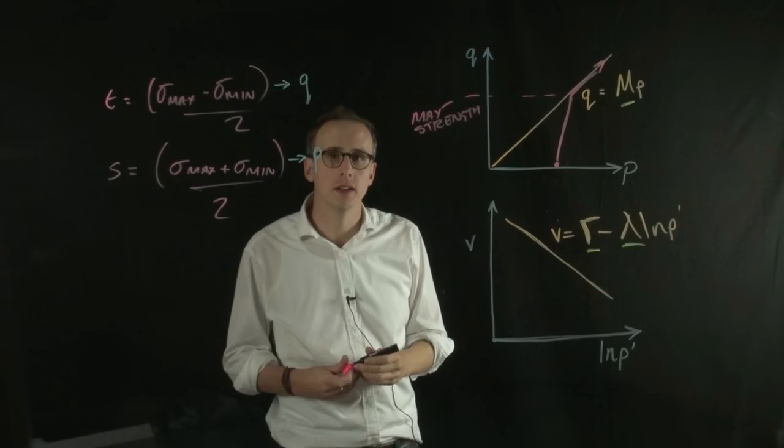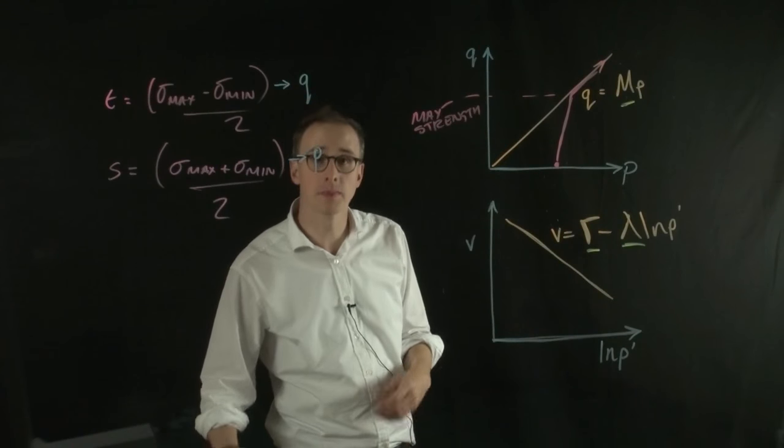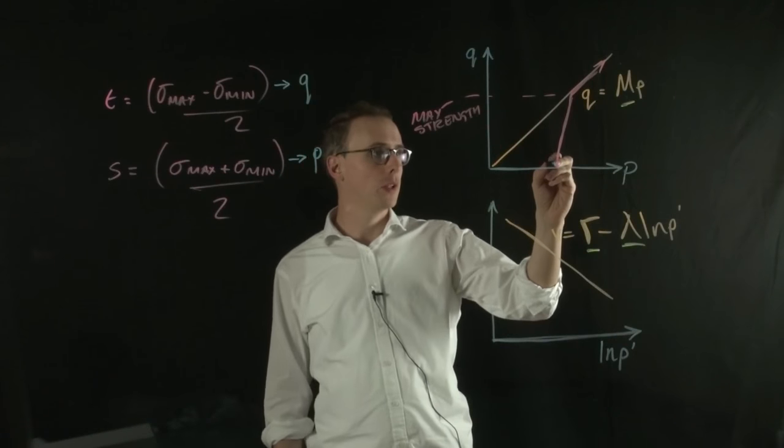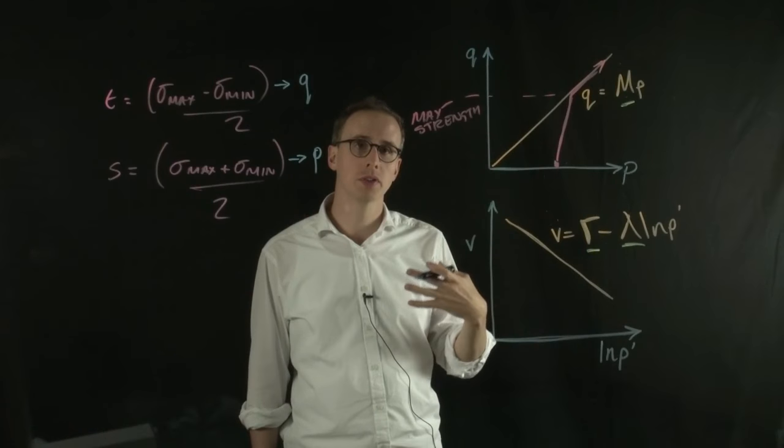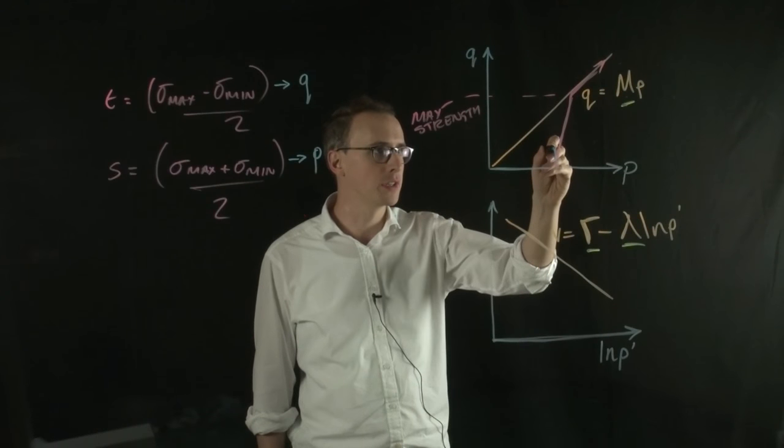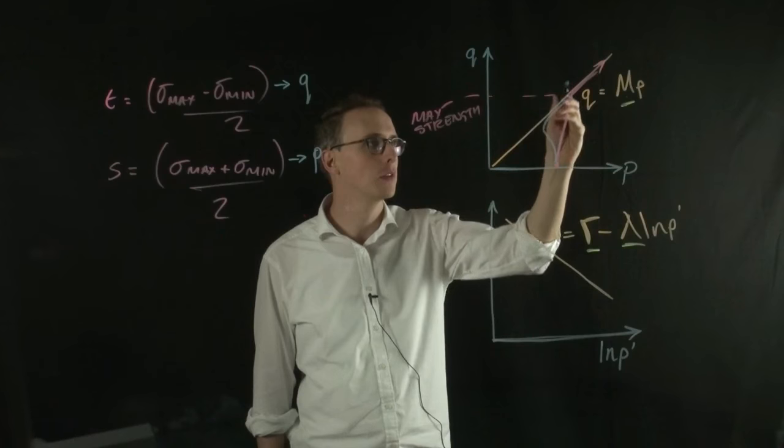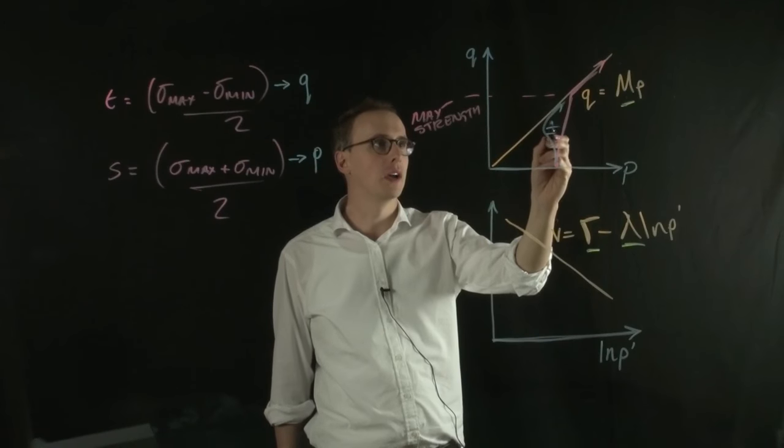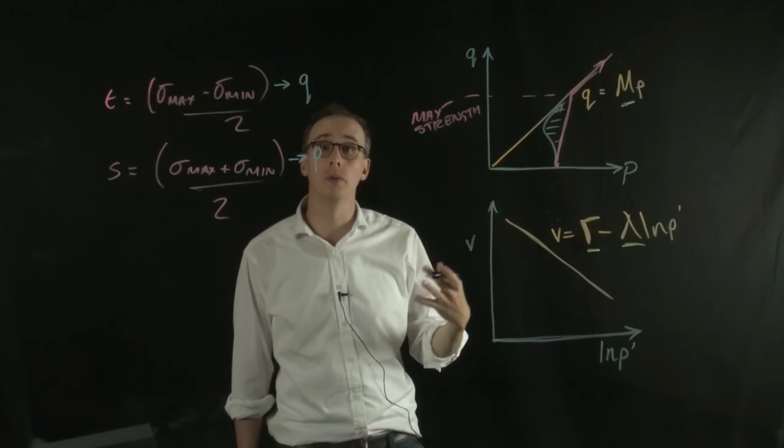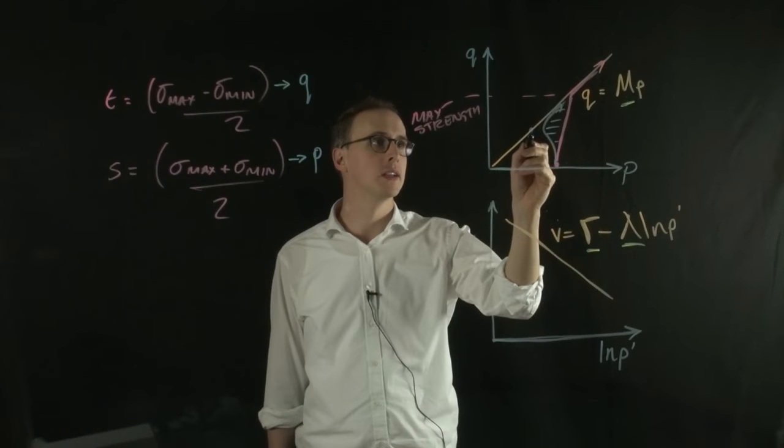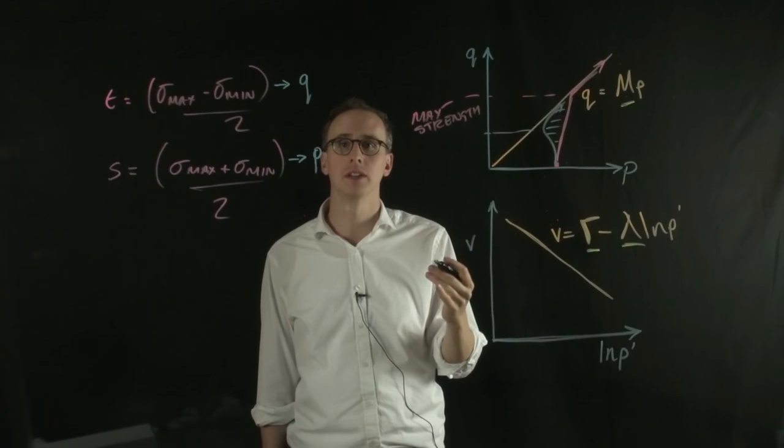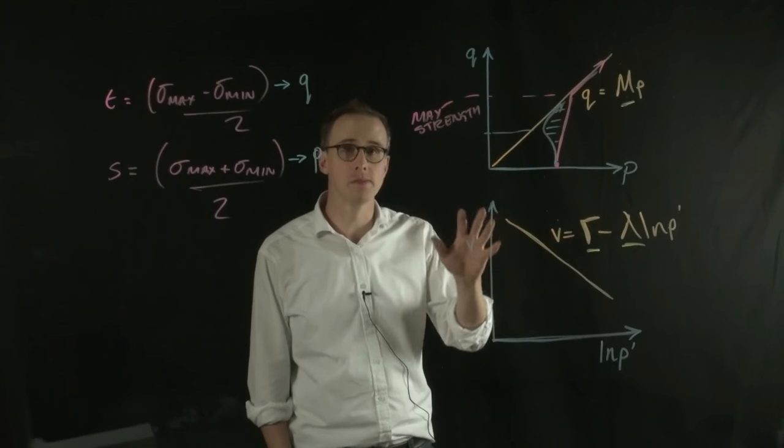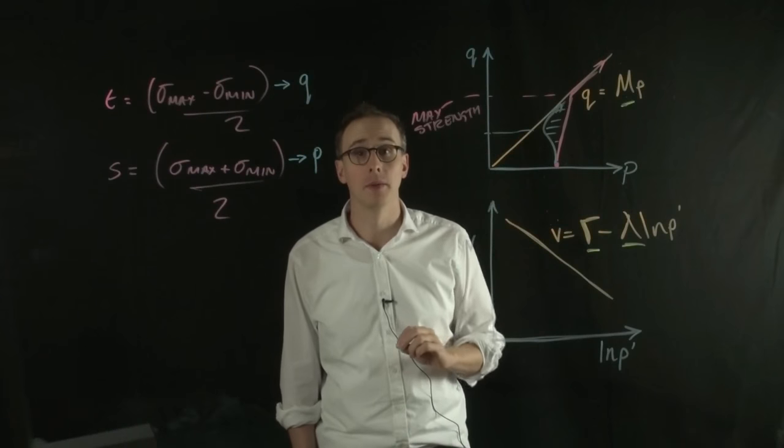But in terms of undrained conditions, the stress path might look completely different, where it might start at the same value, but because water pressure isn't dissipating, you might have conditions that look something like this, where again, it flows up the critical state line, but it reaches the critical state line much sooner than what would happen in a drained test. So you get, in this case, a much different value for the strength of the material. So that's another reason why this critical state theory is important, and it also helps explain why the stress paths to reach that critical state are also important to understand.